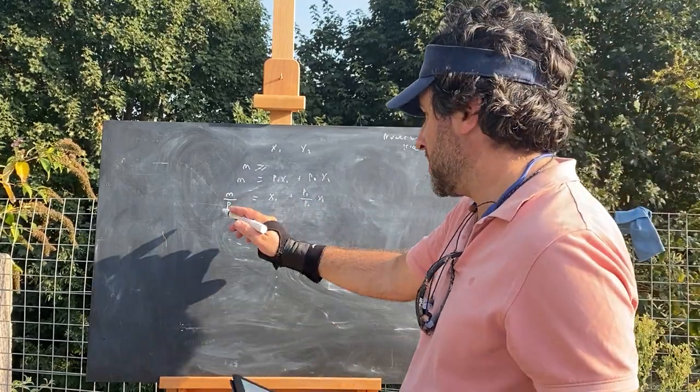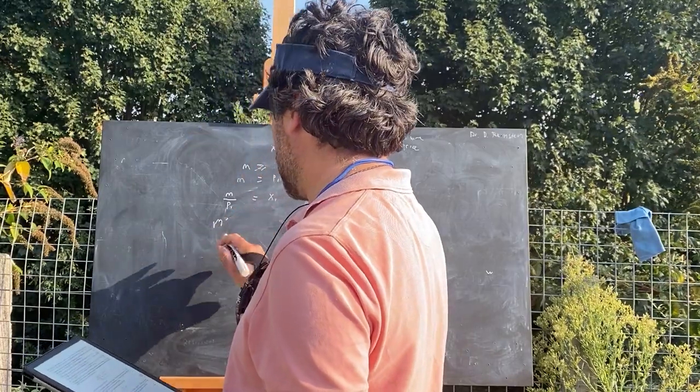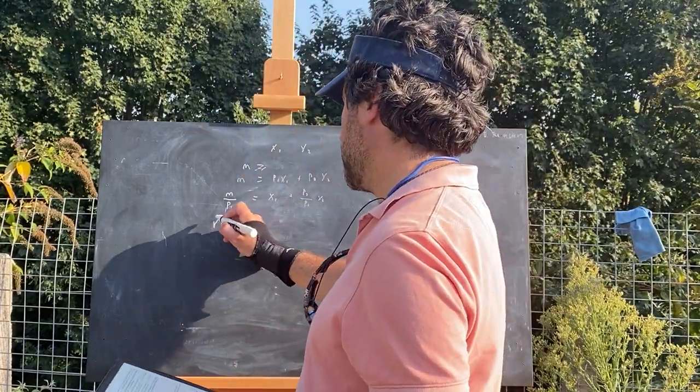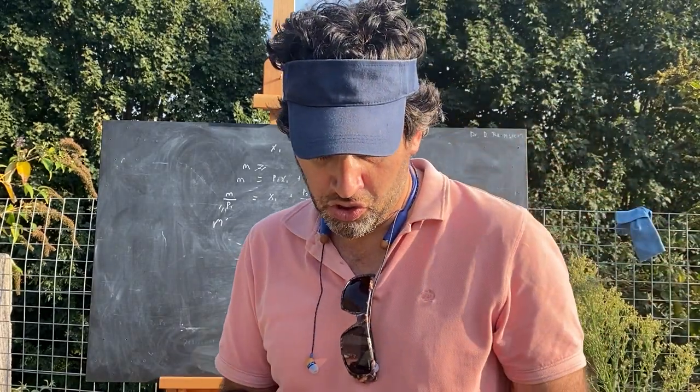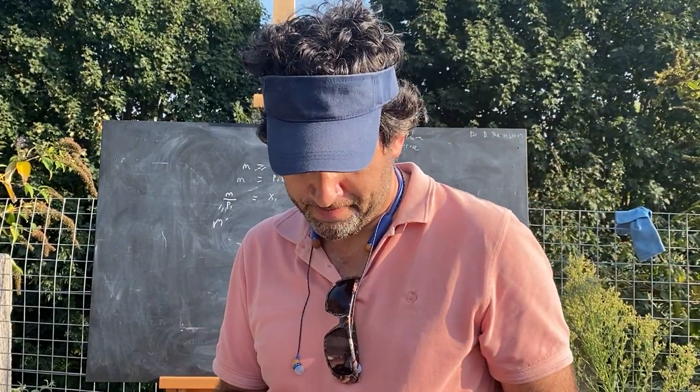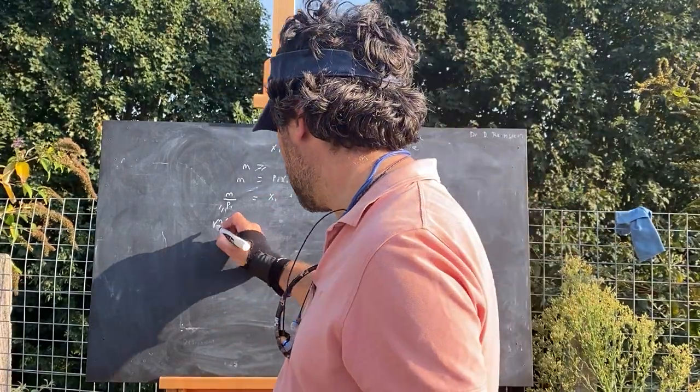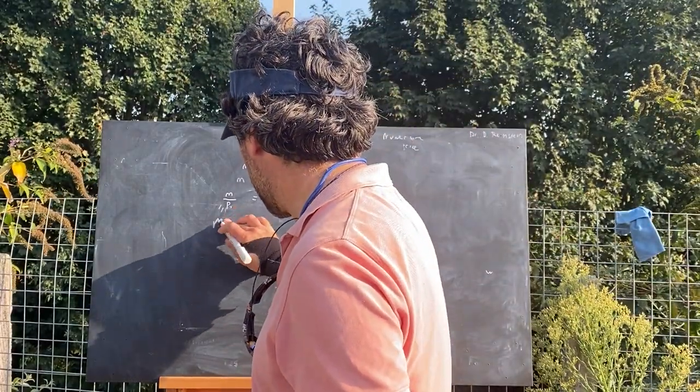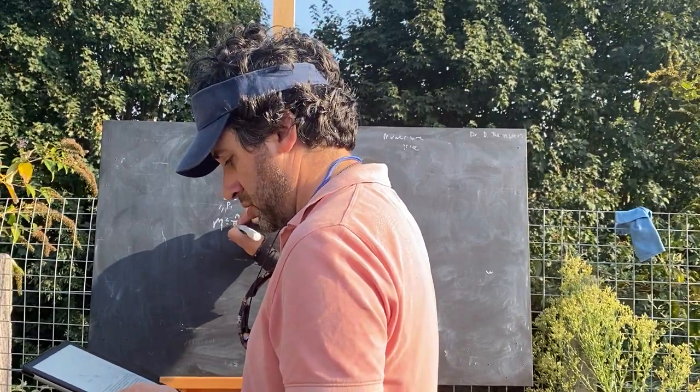We could redefine this M as some other M prime if you like. So call this M prime equals M over P1. That's income expressed in units of chickens. Or to be consistent with the written thing, let's call it capital M equals M over P1.